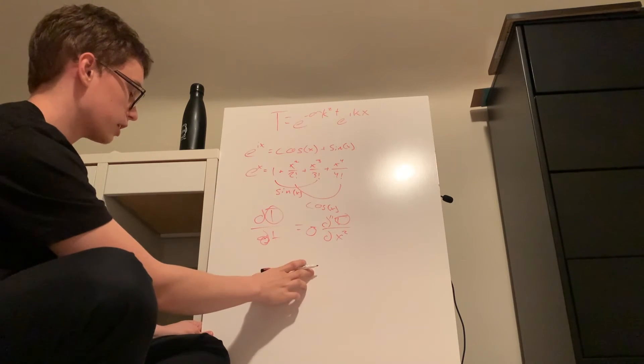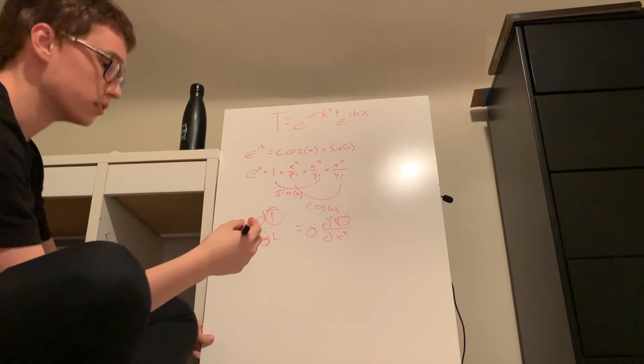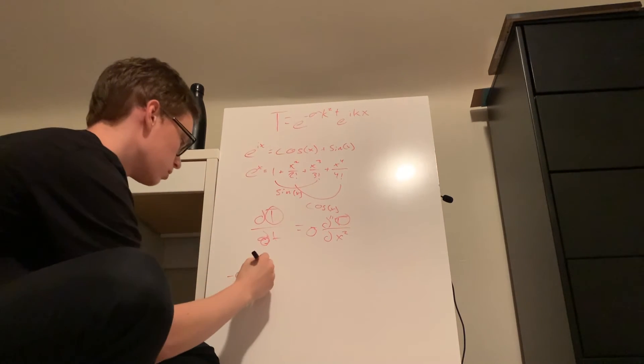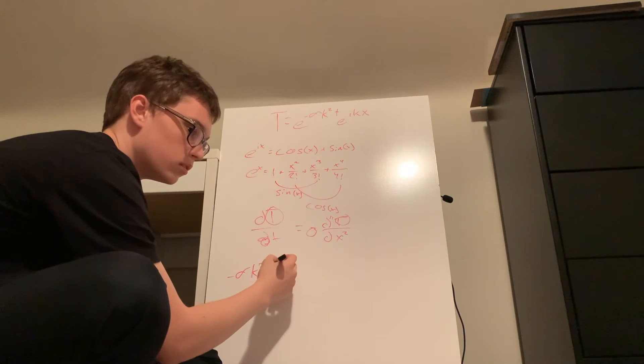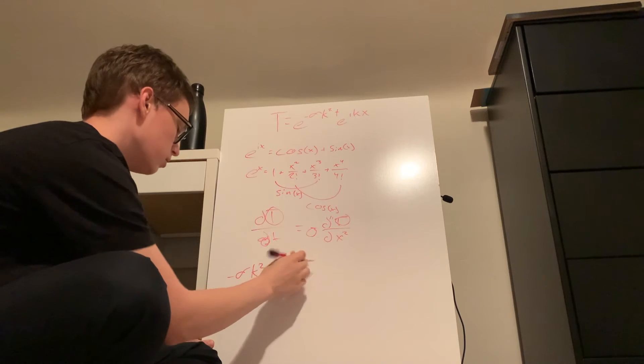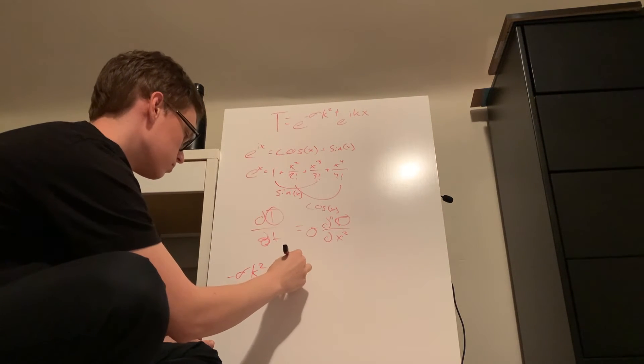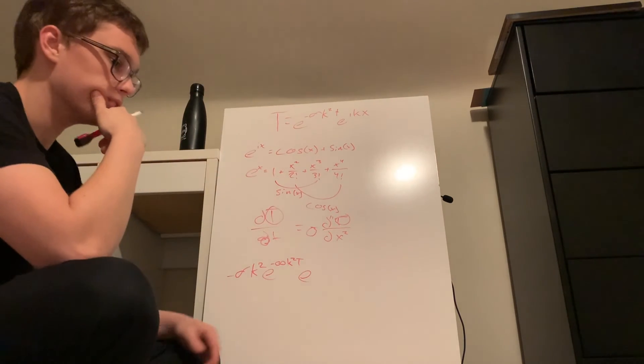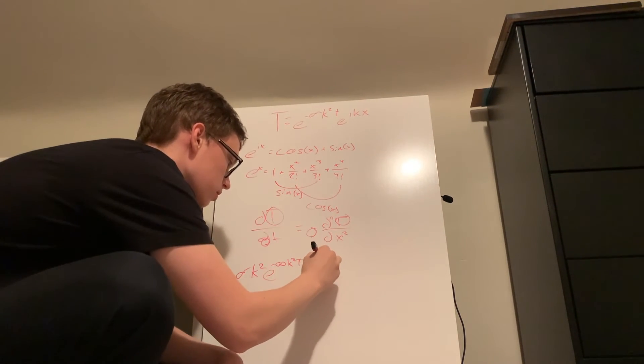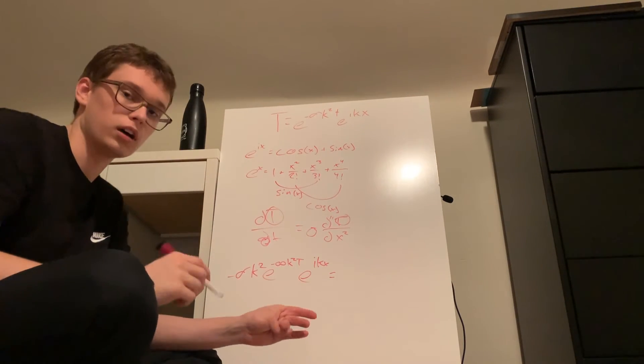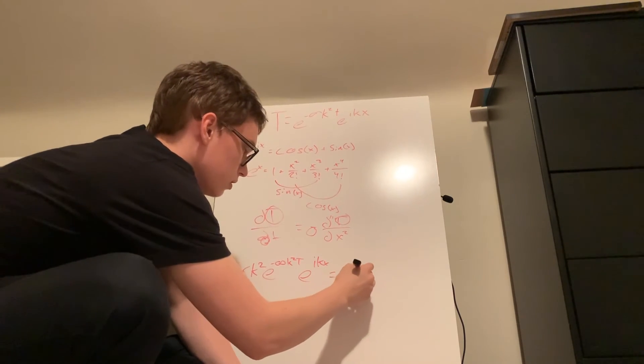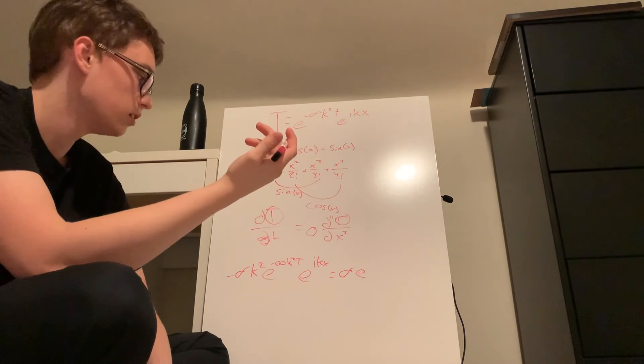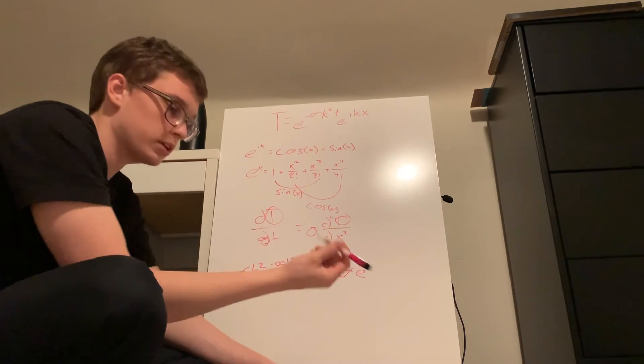So if we plug these in, I'm going to just kind of jump and then explain after I'm done. That's an alpha T and that's times e to the ikx. And that is equal to, sorry again if I'm getting in your way, again our alpha is the heat diffusivity constant, that's why we bring it down, because it is a constant.